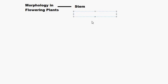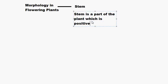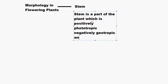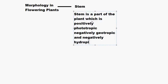Let's start by defining what a stem is. Stem is a part of the plant which is positively phototropic, negatively geotropic, and negatively hydrotropic.